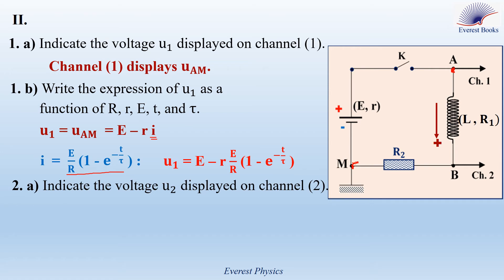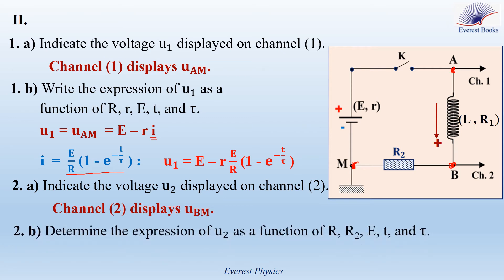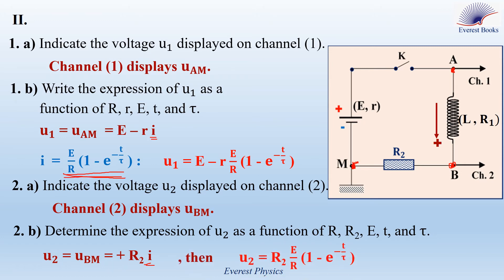Part 2A: indicate the voltage U2 displayed on channel 2. The probe of channel 2 is connected to point B and the ground is connected to point M, so channel 2 displays UBM. Part 2B: determine the expression of U2 as a function of R, R2, E, T, and tau. The voltage UBM equals U2 equals R2 times I. Replacing the current gives U2 equals R2 times E over R into 1 minus e to the power minus T over tau.